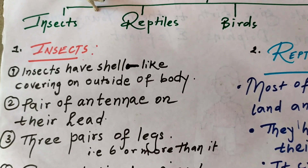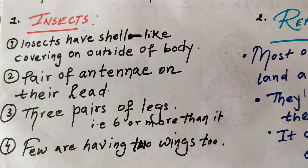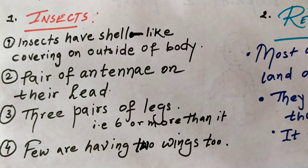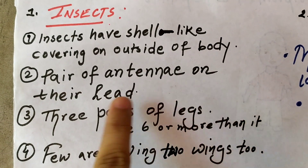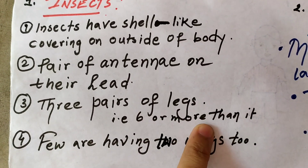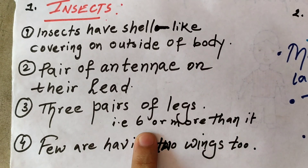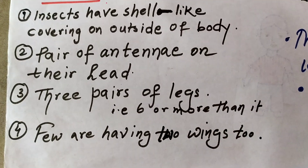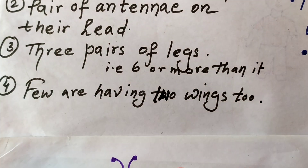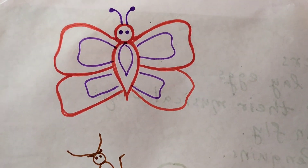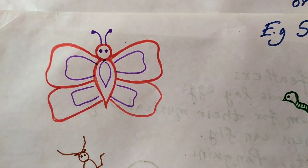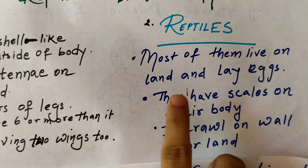Let's look at the characteristics of insects. First point: insects have a shell-like covering on the outside of their body. Second point: a pair of antennae on their head. Third point: three pairs of legs, that is six or more. Fourth: a few are having two wings too. You can observe the diagram of butterfly and ant — please draw and practice as well.